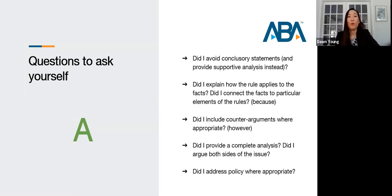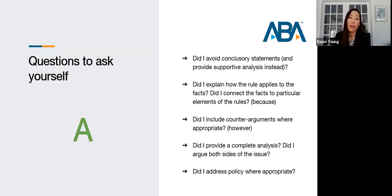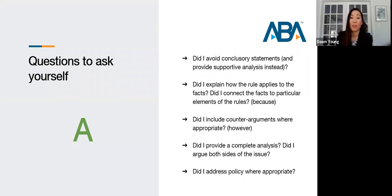In terms of the application: Did I avoid conclusory statements instead of providing supportive analysis? A conclusory statement fails to provide explanatory information detailing step by step how an issue is resolved. For example, 'Because the defendant's intent manifested malice, which is required for murder, he'll be convicted' — that's conclusory because it's not giving a deeper analysis. Ask also: Did I explain how the rule applies to the facts? Did I connect the facts to particular elements of the rules? Did I include counterarguments where appropriate? Did I provide a complete analysis and argue both sides?